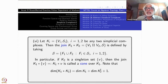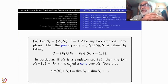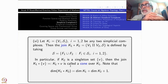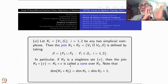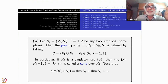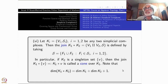Similarly, the suspension is defined as a double cone. That means K₂ is taken to be just two vertices with no edges, and then you perform the join operation K₁ ★ K₂. That would be a suspension of K₁.